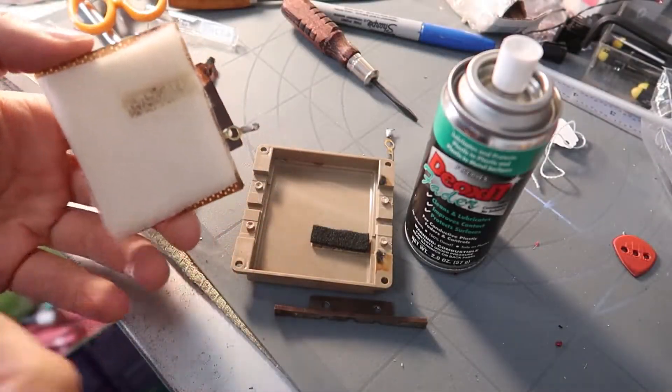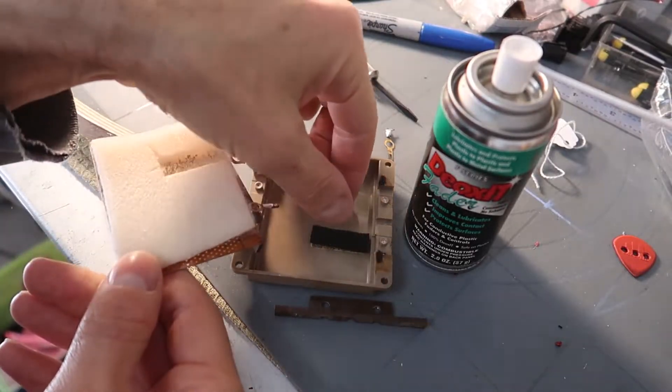It's a piece of foam that pushes a contact onto the mylar that's been metallized. It's a really simple problem. It's not that hard to fix. It's just a shame that they used foam that deteriorates over time.